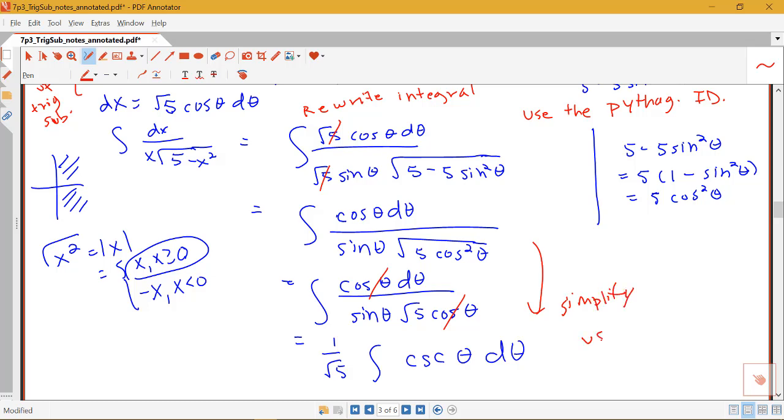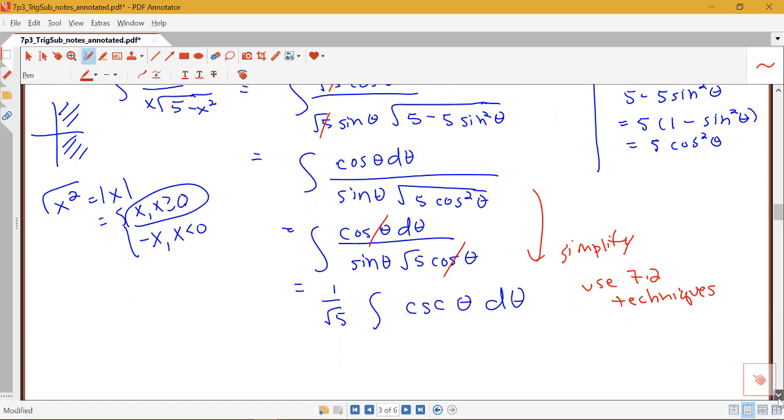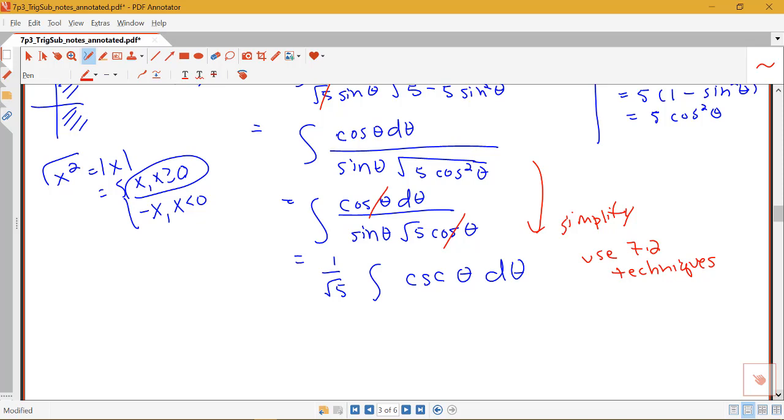And then you're often going to have to use 7.2 type techniques here because you're going to be dealing with the integrals of trig functions. So finding the integral of cosecant theta is one for which we have a rule.